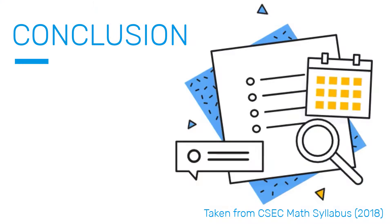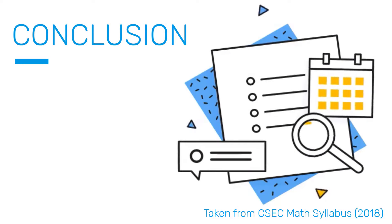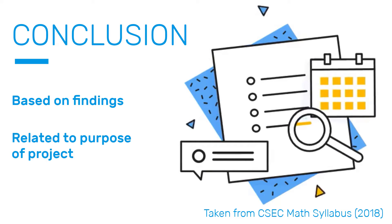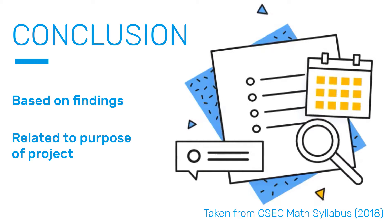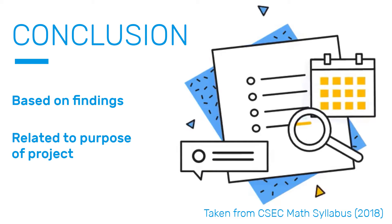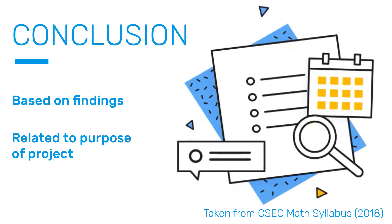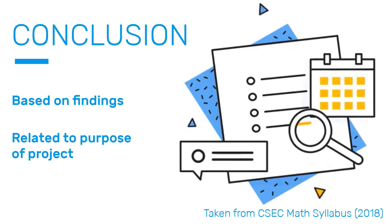Finally, your conclusion — we are at the end. This is a summary of everything you have done so far. The way I like to think about it is that you are answering your project title. It's worth 2 marks, and you get those 2 marks if it is based on findings and related to the purpose of the project. But you will only get 1 mark if it's related to the project in some way.